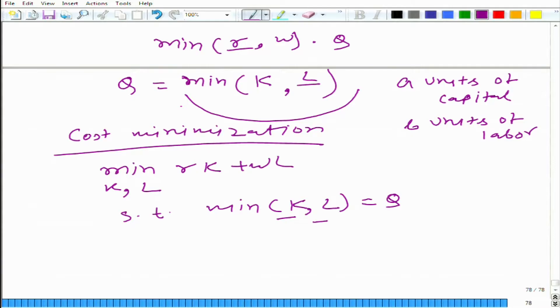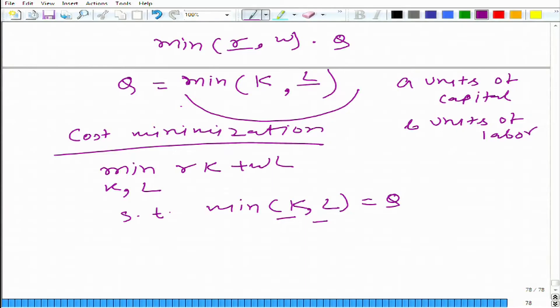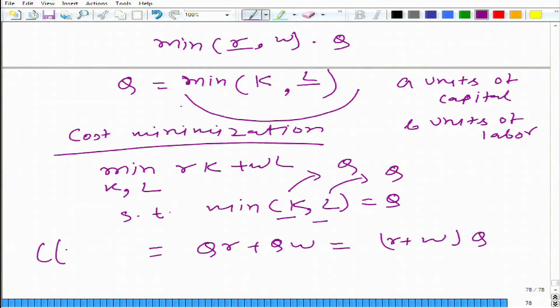If you have more than 1 unit of capital and just 1 unit of labor, you would be wasting the extra capital. Since we are minimizing cost, we should not waste anything. The cost-minimizing way is to use exactly 1 unit of capital and 1 unit of labor, at a cost of r plus w. For producing q units you need q units of capital and q units of labor, so the cost function is c(r, w, q) equals (r plus w) multiplied by q.